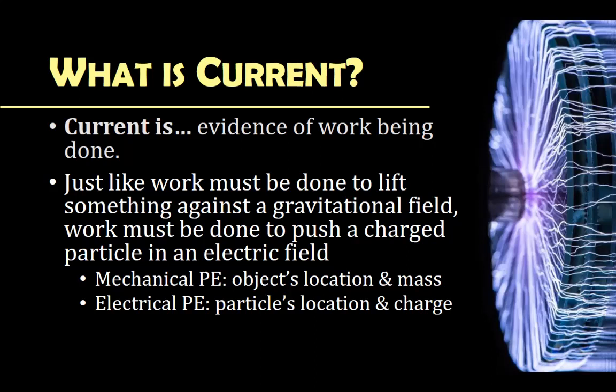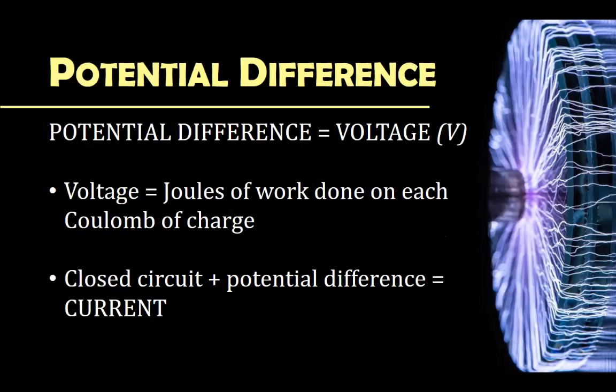In order for us to see a movement or flow of charge, we need to have a potential difference between the potential energy and it getting converted into kinetic or moving energy. In electricity, we call that potential difference a voltage — a voltage gap, the distance in terms of potential between one part and another part of the battery or circuit. Voltage is joules of work done on each coulomb of charge.